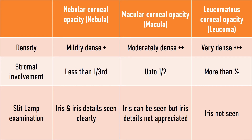To summarize: nebula is the least dense, macular opacity is moderately dense, and leucomatous is the densest. In nebula, one third of stromal thickness is involved; in macula, up to half; and in leucoma, more than half. On slit lamp examination, the iris and its details can be seen clearly through a nebular opacity. In macular opacity, the iris can be seen but its details are hazy. In leucomatous corneal opacities, the iris cannot be seen at all.